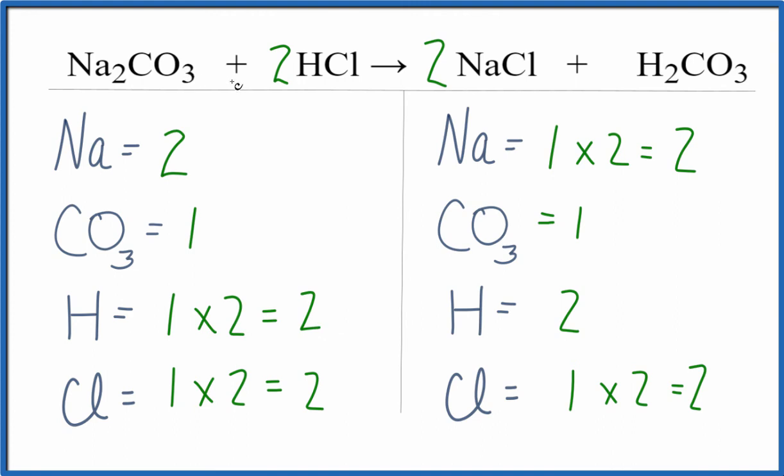The trick here, I can count these polyatomic ions like CO3 as one item if I have CO3s on both sides of the equation. That really makes this a lot simpler to balance.